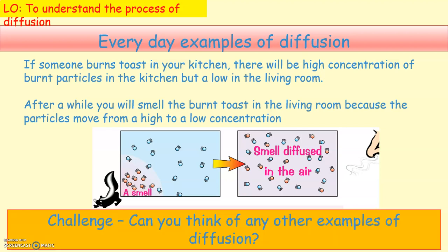Another example: if you spray perfume in one room, someone in another room can smell it. The concentration of the perfume is high in the room where you sprayed it but low in the other room. The particles of the perfume diffuse from the high concentration room to the low concentration room, and the person there can smell it.